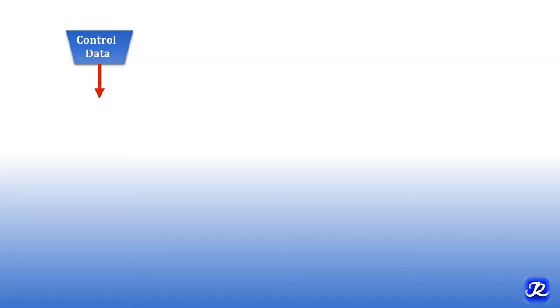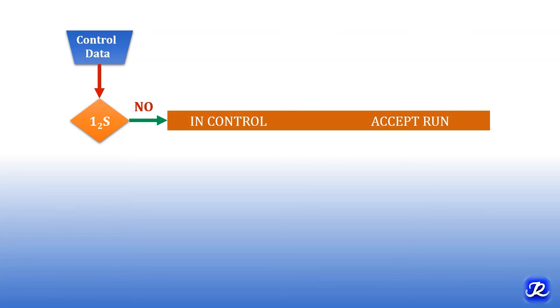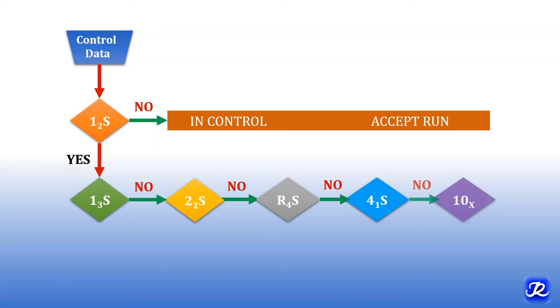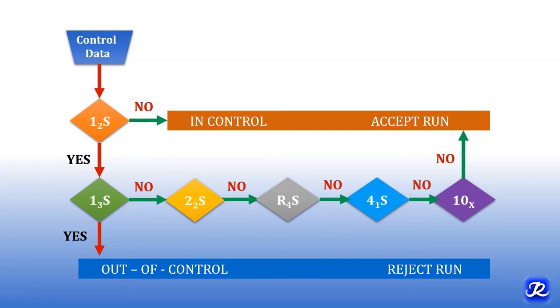Let's see when to accept or reject a run. Observe the control data: if the 1-2S rule is not violated, the run is in control — accept the run. If it is violated, it is only a warning rule; do not reject the run, but look for other errors. If the 1-3S, 2-2S, R4S, 4-1S, and 10X rules are violated, it is out of control — reject the run, look for errors, troubleshoot, and take corrective measures. These are all rejection rules.